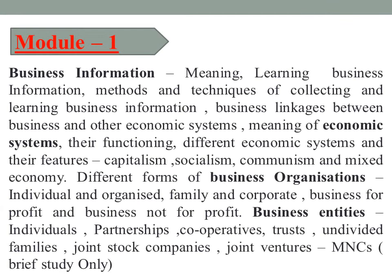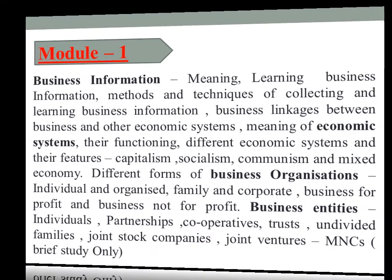The first module deals with business information — its meaning, methods and techniques of collecting and learning business information. Economic systems, their meaning and functioning, including capitalism, socialism, communism and mixed economy. The different forms of business organization — individual and organized, family and corporate. Business entities such as individuals, partnerships, cooperatives, undivided families, joint ventures and MNCs. The first module mainly deals with business information, economic systems, and the various business organizations and entities.